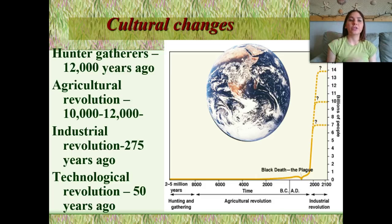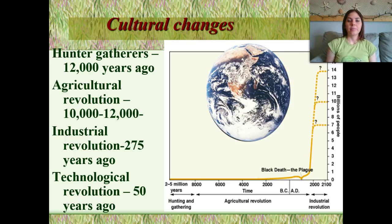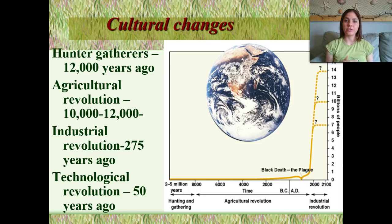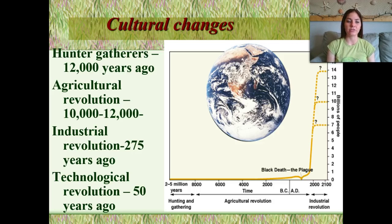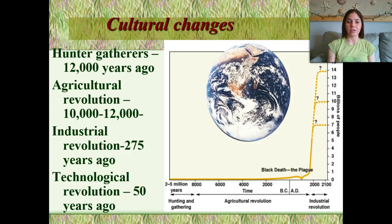Cultural changes have occurred. About 12,000 years ago we were a hunter-gatherer society. Then around 10,000 to 12,000 years ago the agricultural revolution started taking place. Then we had our industrial revolution about 275 years ago. And currently we are in our technological revolution, which has been in the last 50 years.